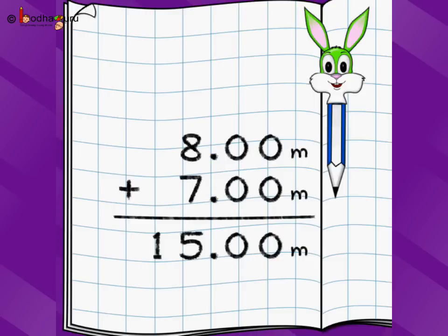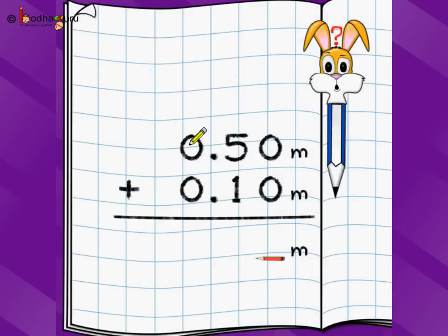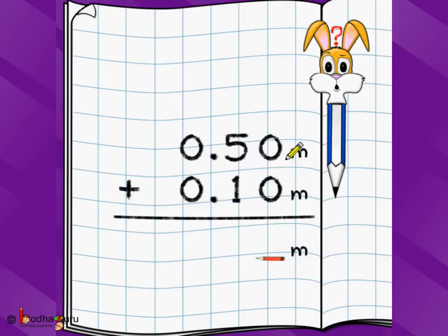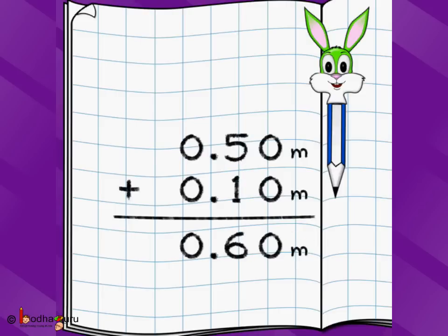Let's take another problem. We have 0.50 meters, which is nothing but 50 centimeters, plus 0.10 meters, which is nothing but 10 centimeters. We do exactly the same thing — write one number below another, numbers after the decimal point below each other, and numbers before the decimal point below each other. Starting the addition: 0 plus 0 is 0, 5 plus 1 is 6, 0 plus 0 is 0. The answer is 0.60 meters.